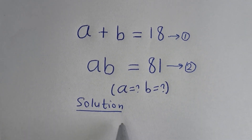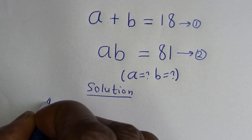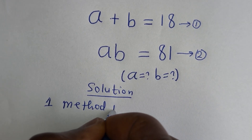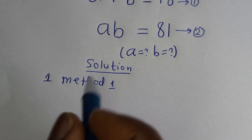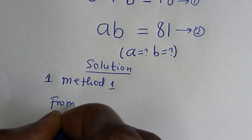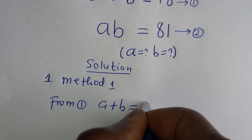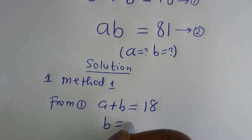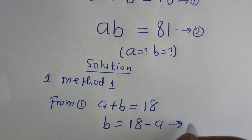We are going to solve this in two different ways. Let's consider the first method, called Method 1. From equation 1, A plus B is equal to 18, therefore B is equal to 18 minus A. Let us call this equation 3.